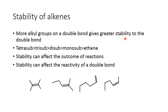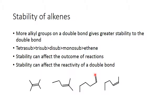The more alkyl groups that are on a double bond, the greater the stability of that double bond. Let's look at these four alkenes — they all have six carbons. You can go through and count each one of them and you'll see they all have six carbons. They're isomers of each other — not cis-trans isomers, but constitutional isomers.